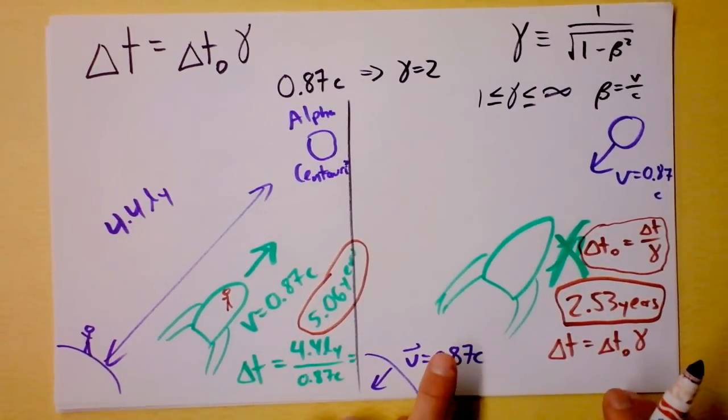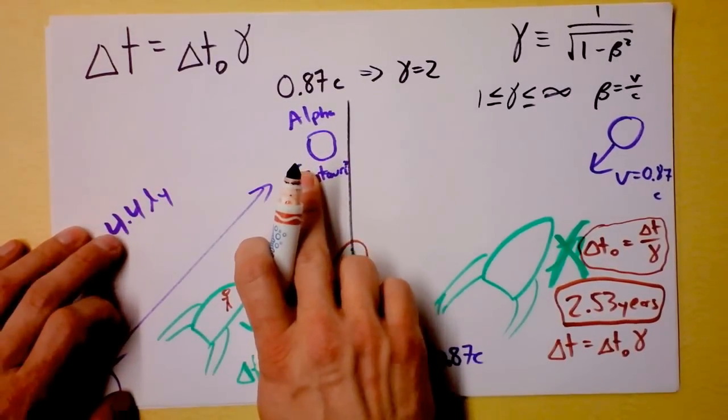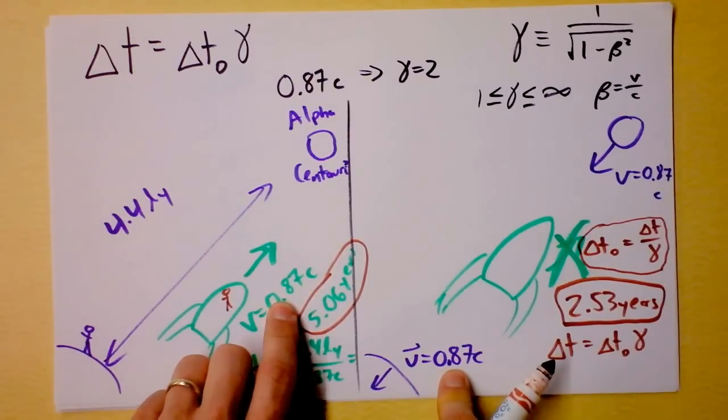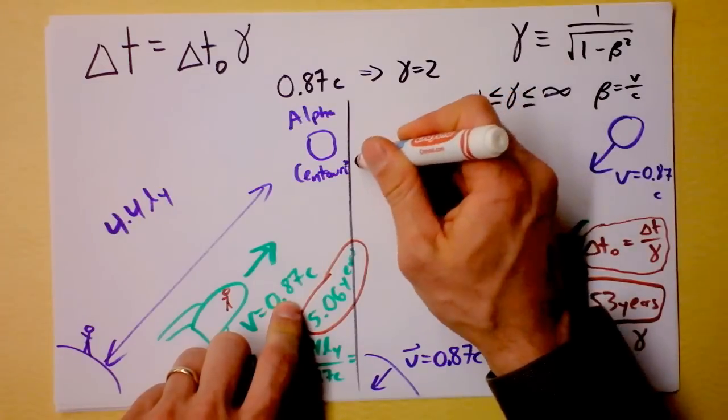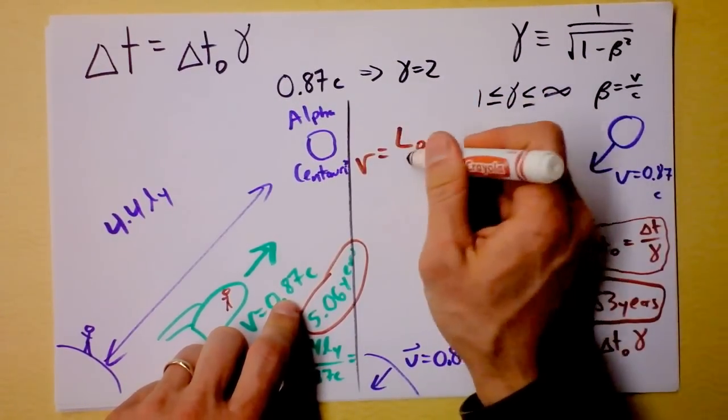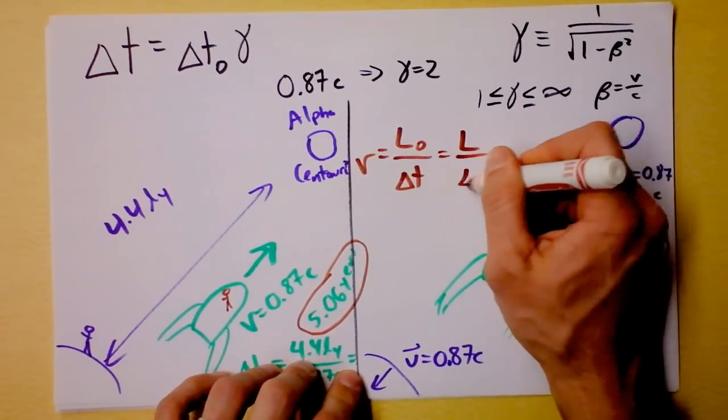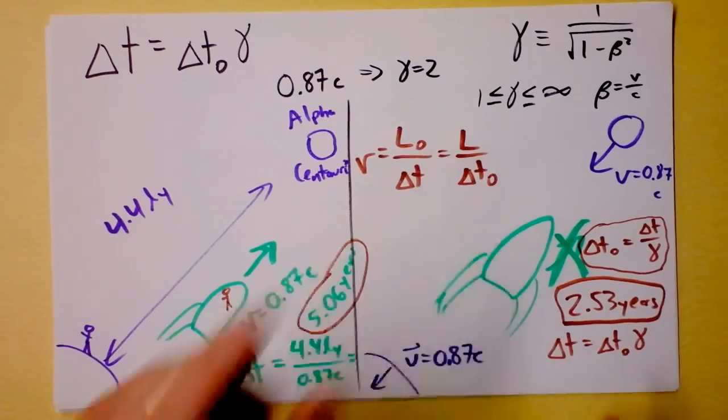Also, the person on Earth will think that it took them 5.06 years. So there's a factor of two right there. Very interesting. How is that reconciled with the fact that this guy thinks that the rocket ship went 4.4 light years and they both think that the speed is the same? That's a little bit of a problem. Let's investigate what that speed means. Speed is L naught divided by delta T. But of course, that has to be the same thing as L divided by delta T naught.